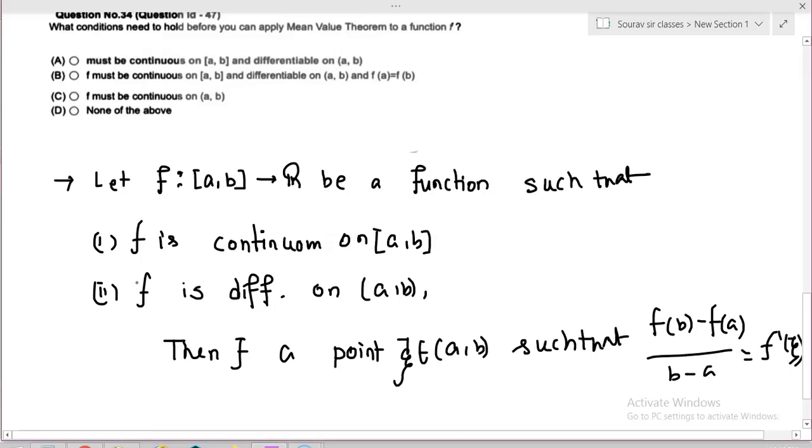So the conditions are: f is continuous on [a,b] and f is differentiable on (a,b). Looking at the options, f must be continuous on [a,b] and differentiable on (a,b). This is option A, which is our correct answer. Okay.